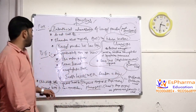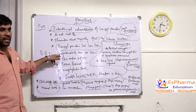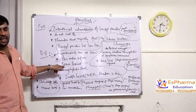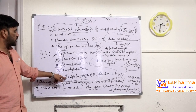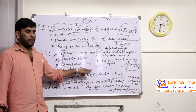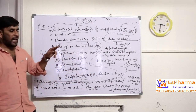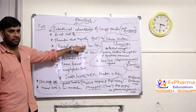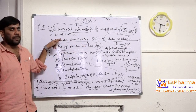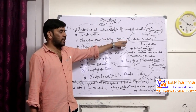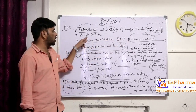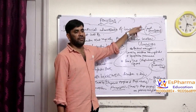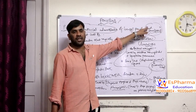The side effects of penicillin are hypersensitivity reaction, skin rashes, serum sickness, anaphylactic shock, and Jarisch-Herxheimer reaction. Benzyl penicillin is the first naturally occurring penicillin and has a lower half-life. Excretion of penicillin is by tubular secretion. Penicillin does not cross the blood-brain barrier. Intrathecal administration of benzyl penicillin will cause convulsions.